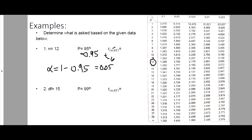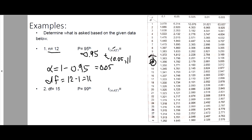So we have T sub 0.05. The degrees of freedom is N minus 1, so we have 12 minus 1, which is 11. So we have T sub 0.05 comma 11. Looking up 0.05 and degrees of freedom 11 in the T-table, the answer is 1.796.